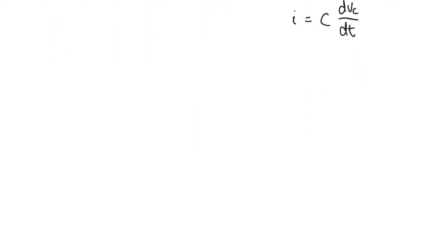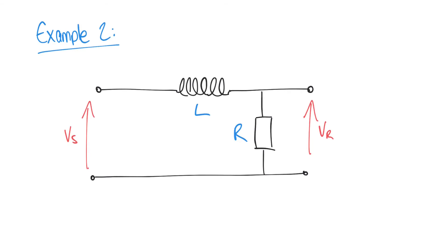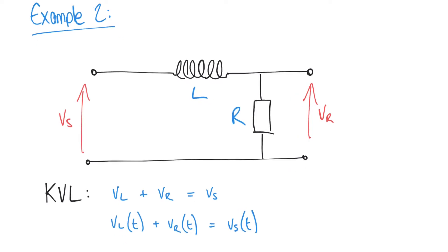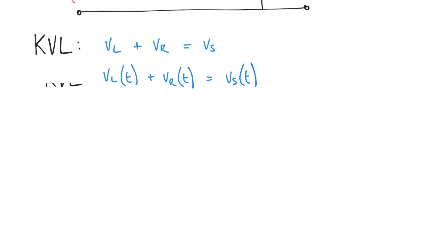Let's look at a second example: a series RL circuit, with two components — an inductor and a resistor. We apply supply voltage VS, but now the output is the voltage measured across the resistor, VR. As before, we begin with Kirchhoff's voltage law: VL(t) plus VR(t) equals VS(t), expressing voltages as functions of time. Later in this topic we'll talk about Laplace transforms, converting from the time domain and back again, but we won't worry about that for now.